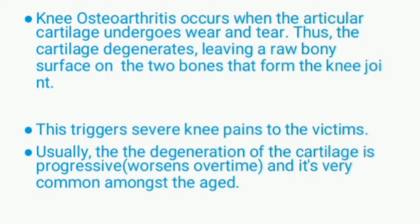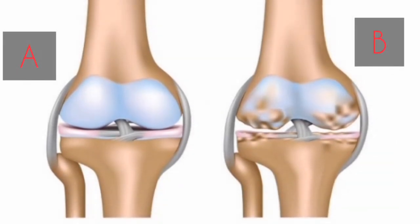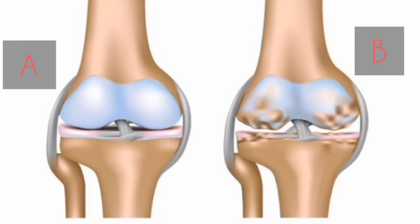The degeneration leaves a raw bone surface on the two bones that form the knee joint, triggering severe knee pain. Usually the degeneration of the articular cartilage is progressive, thus worsening over time, and it is very common among the aged. The image clearly shows the difference between healthy knee joints and a knee joint with osteoarthritis — A represents the healthy knee joint and B represents the osteoarthritic knee.